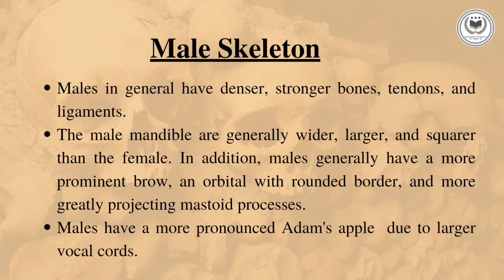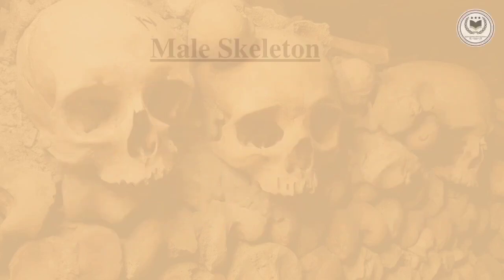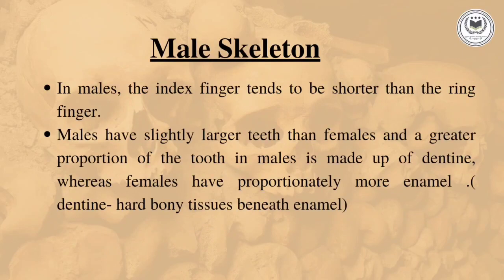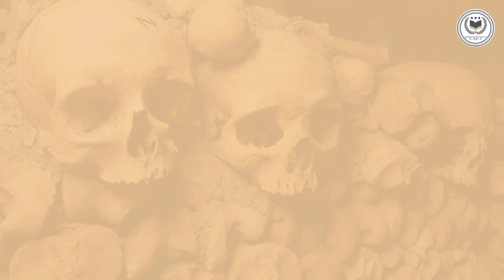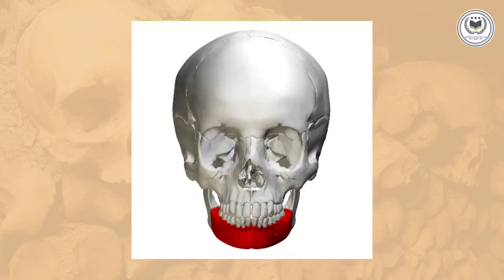Males have a more pronounced Adam's apple due to larger vocal cords. In males, the index finger tends to be shorter than the ring finger, which is of similar size in females. The teeth of males are larger in size compared to females. The mandible of males is larger, wider, and squarer in shape compared to females.